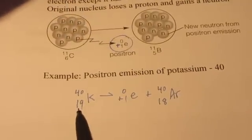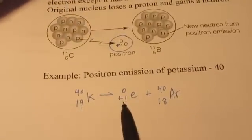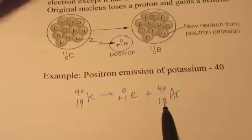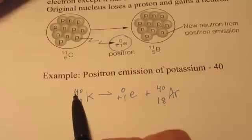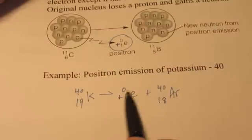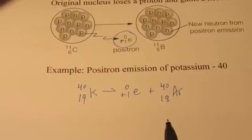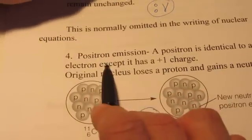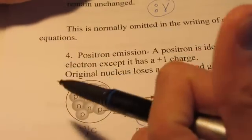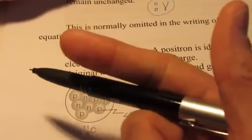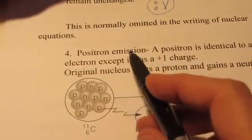Once again, let's check the math. 19 for the atomic number on the left. 1 and 18 equal 19 on the right. 40 for a mass number on the left. 0 plus 40 is the mass number on the right. So, there's positron emission. It's unusual. We don't see that very often. We normally will see alpha. And we will see beta. And we will talk about gamma emission. Every once in a while, positron emission comes up.